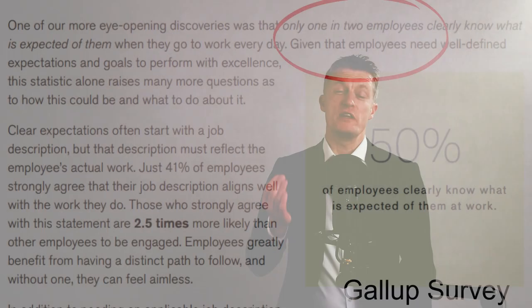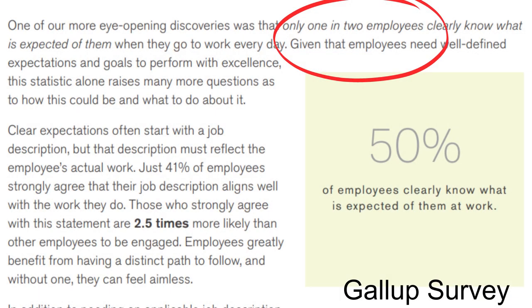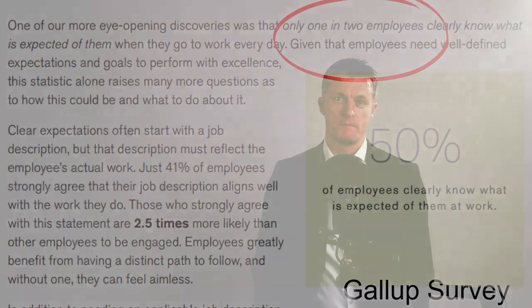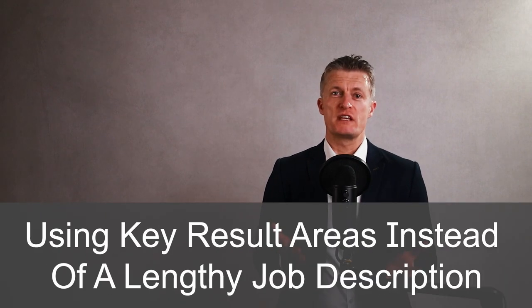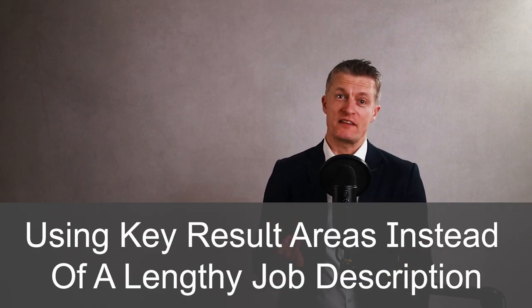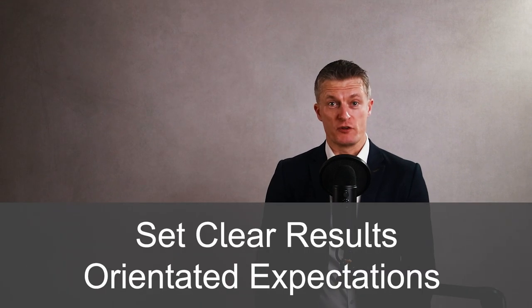Per Gallup, only 50% of employees clearly know what is expected from them at work. How can any employee do a great job if they don't know what great looks like or how this will be measured? Using Key Result Areas instead of a lengthy job description helps a manager set clear, results-oriented expectations, and these expectations can be updated regularly and quickly.